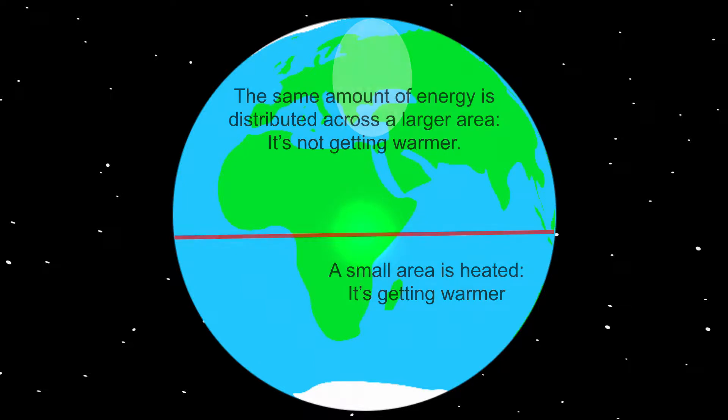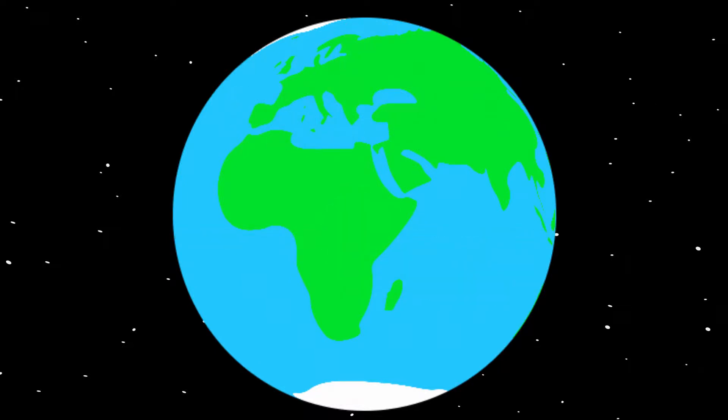Until now, we've assumed that the axis of the Earth is a vertical line. Compare it to the axis of the wheel of your bike. This is the middle point. In reality, the axis isn't vertical. It's rotated 23 and a half degrees.